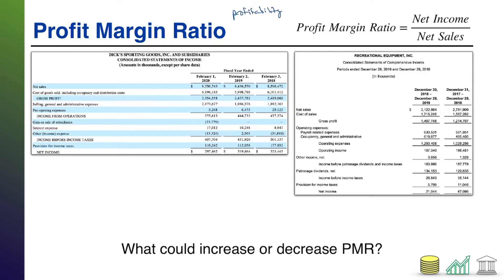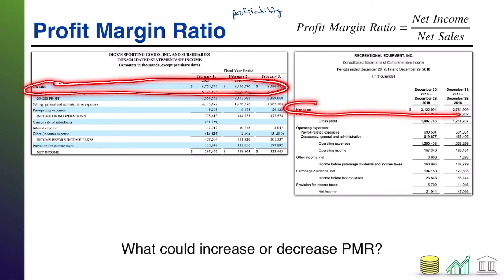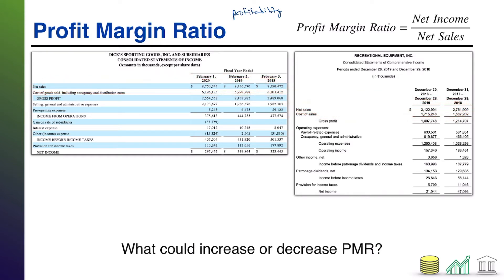Notice the denominator in that ratio: net sales. Net sales is way up at the top of the income statement — it's talking about the revenue from your products.